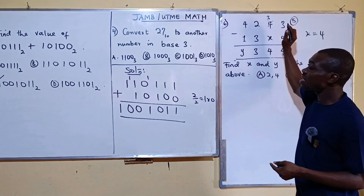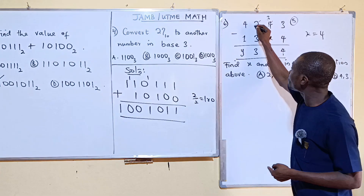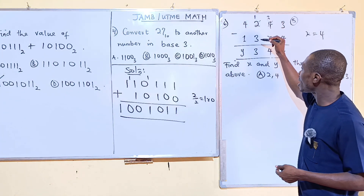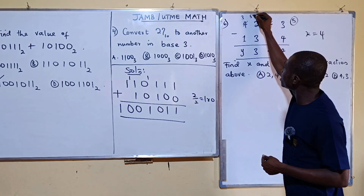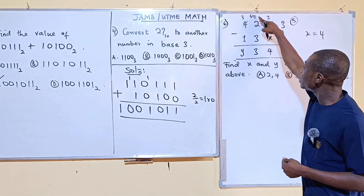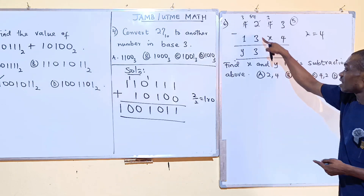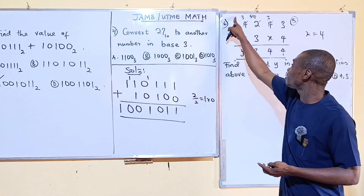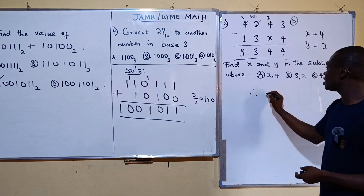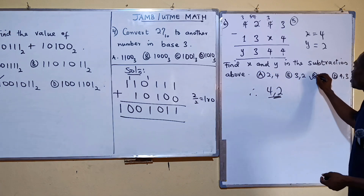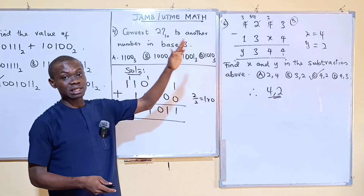Since we borrowed 1 from the next column, that digit is reduced to 1. Then 1 minus the next digit requires borrowing again. Borrowing 1 gives 5, so 5 plus 1 equals 6, and 6 minus 3 equals 3 — confirming that digit. The remaining column gives 3 minus 1, so y equals 2. The answer is (4, 2), which is option C. We have now covered all JAMB number bases questions from 2010 to 2018.